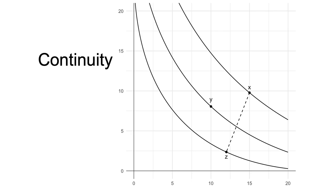Under the continuity axiom, there would be no holes in that line. For some value of p, that gamble will be on the same indifference curve for y. At that point, p times x plus 1 minus p times z is equally as good as y.